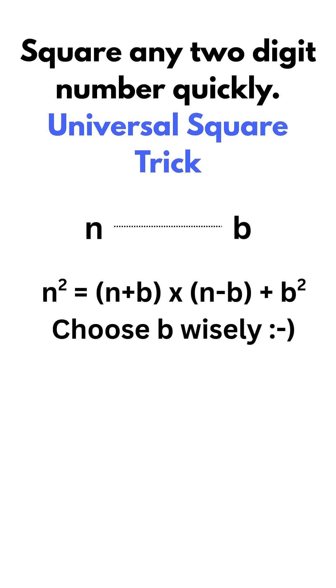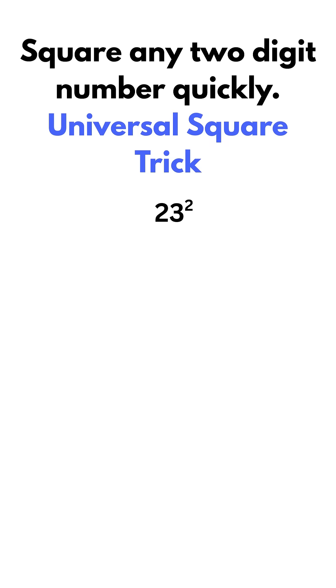Let's take an example of 23 squared. We know that multiplying any number with 10 is easier, right? Choose b in such a way that it makes n plus b or n minus b a multiple of 10. Let's take 3 as b, because it will give us a multiple of 10 to calculate, and we know the square of 3 is 9.